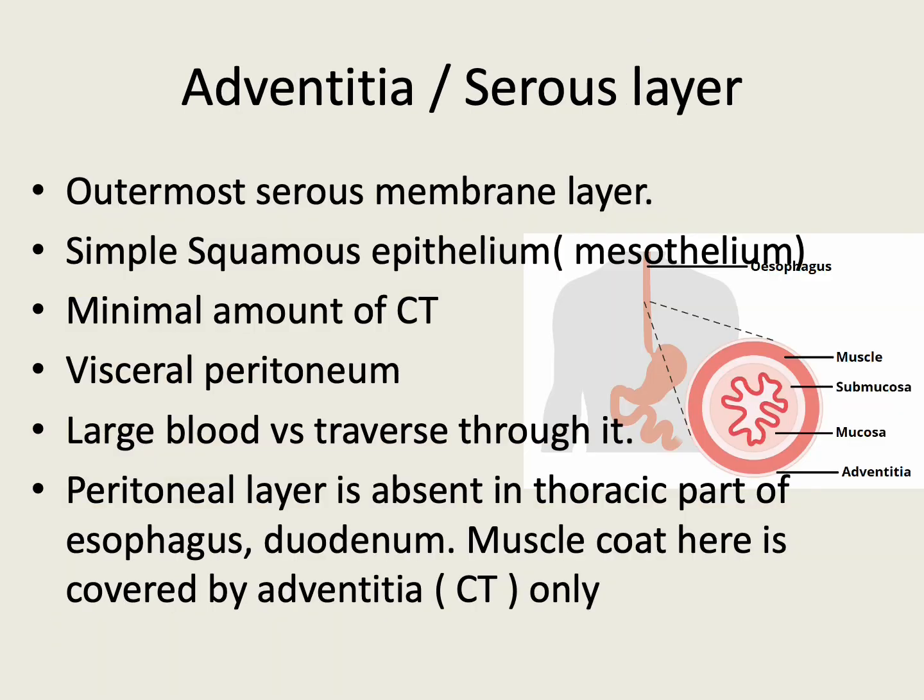The outermost layer covering the muscle is the serous layer or the adventitia. It is a serous membrane lined by simple squamous epithelium called the mesothelium, having a minimal amount of connective tissue, and it is in continuation with the visceral peritoneum. It consists of large blood vessels, lymphatics, and nerve trunks that traverse through this layer to enter the gut wall. This peritoneal layer is absent in the thoracic part of the esophagus and the duodenum, where the muscle coat is covered by the adventitia only.